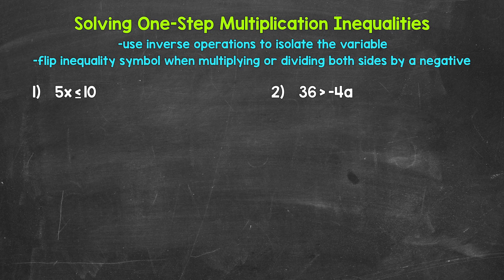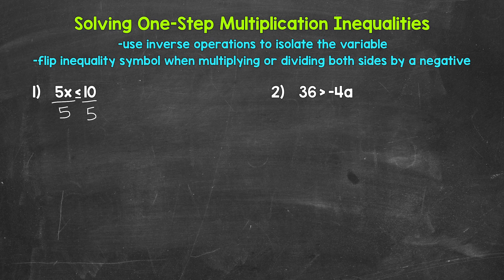Let's jump into number one, where we have 5x is less than or equal to 10. We need to isolate x. x is being multiplied by 5, so we need the inverse operation of multiplication — that's division. So divide the left side of the inequality by 5. Whatever we do to one side of an inequality, we must do to the other to keep it balanced, so divide the right side by 5 as well.